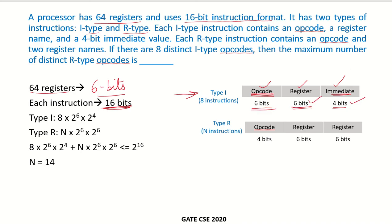There are 8 distinct I-type opcodes, meaning 8 instructions of this type. Using the 6-bit opcode field, we can specify at most 2 to the power of 6, which is 64 instructions, so 8 instructions is easily possible with these 6 bits.